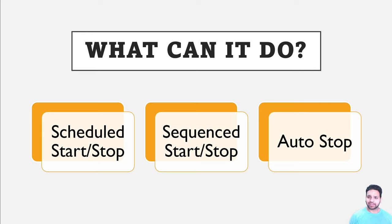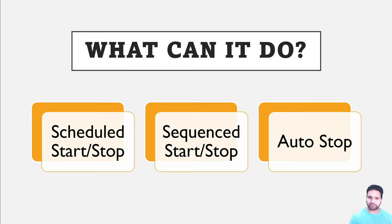The last option is Autostop. Based on the CPU utilization and a specific time frame, you can define that during off hours, if a specific virtual machine's CPU utilization is below 10%, it should be shut down. This feature is also supported in version v2.